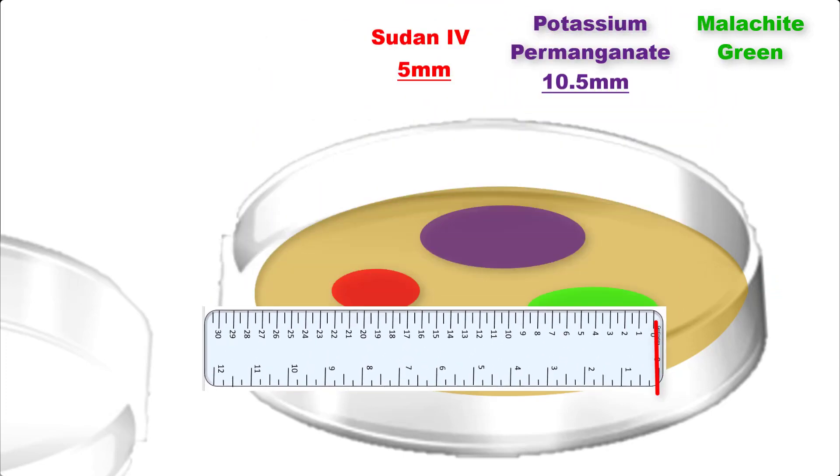Now, we'll measure malachite green. Malachite green measured about 8.5 millimeters.